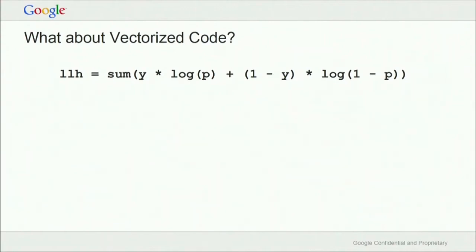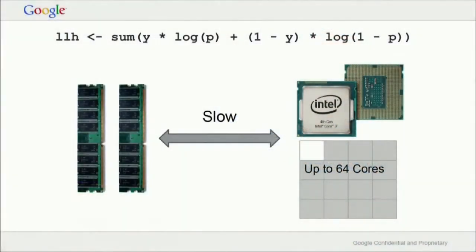What about vectorized code? The optimizations I've discussed work well when you're writing tight loops or doing recursive functions. Vectorized code is notionally something R is good at — but only so much. The problem comes down to the memory bus. For something like calculating the log-likelihood of a simple binomial model, the data has to come from memory, get processed by the CPU, and then get sent back. The data continually goes back and forth across the bus between memory and the CPU. Because that memory bus is slow, the CPU sits there idle — a brilliantly fast CPU with 64 cores, but only one doing anything, and only part-time, because it just can't get enough data.